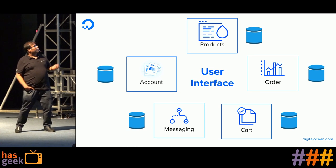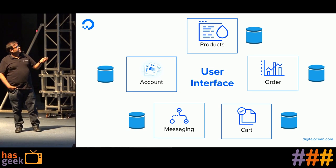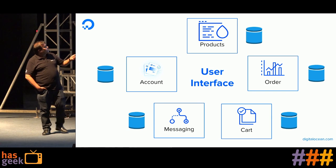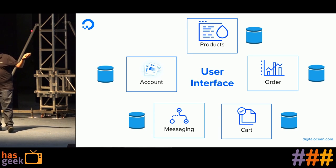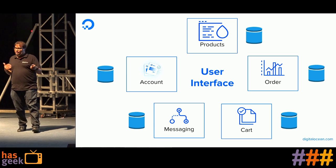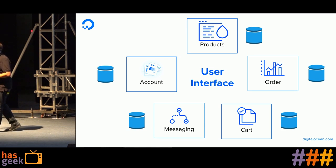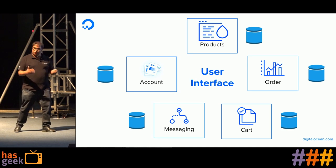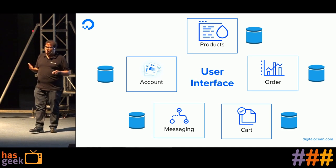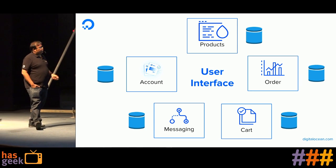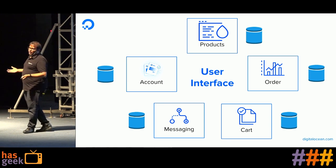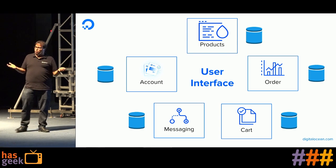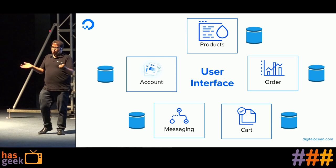All these services are decoupled because they have separate databases. Any code push to your product will not affect the order system, and any code push to order will not affect the cart system. That is how it is decoupled unless these services are interacting with each other. Microservices interact with each other through various queues, message brokers, and other stuff.